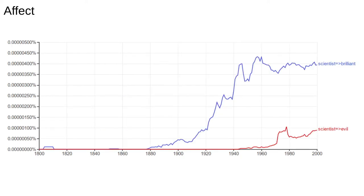We can also look at word dependencies in the Ngram viewer — basically, how often one word modifies another. Searching for 'scientist implies brilliant' will find mentions of brilliant scientists, brilliant social scientists, brilliant female scientists, and so on. Here we see brilliant scientists are mentioned consistently more often than evil ones. Lots of problems in text analysis are about identifying entities in documents, like scientists, and figuring out what is associated with them — often trying to find the descriptors or emotions commonly expressed in relation to that entity.